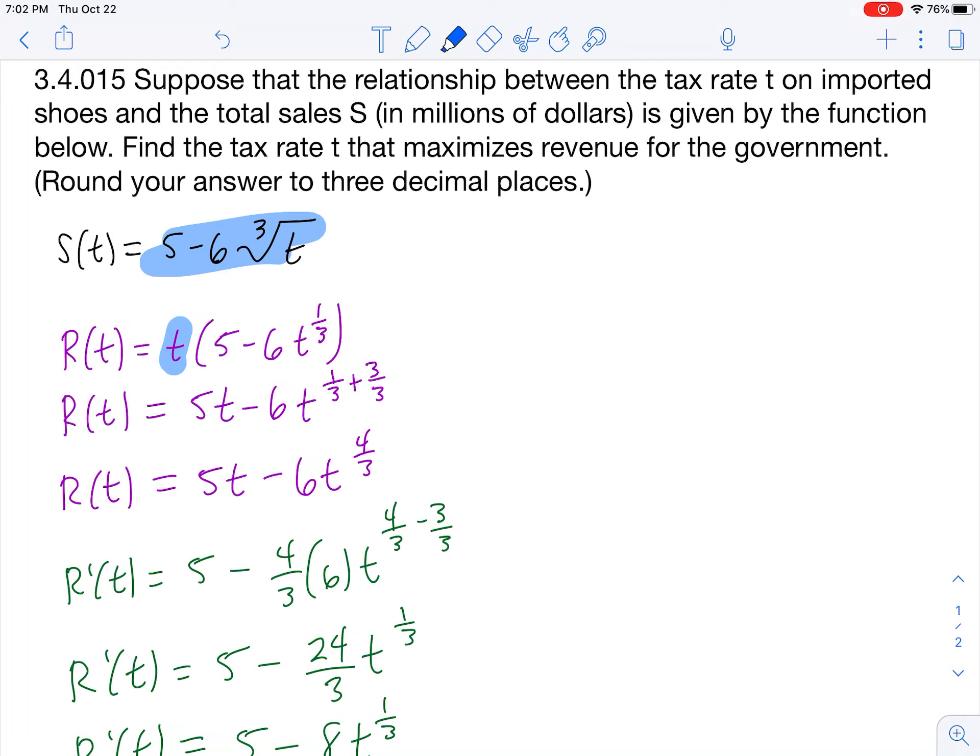Multiplying 5 minus 6 cube roots of t times t looks like this. I first change the cube root of t to t to the one-third power so that it's easier to work algebraically. Then we need to distribute the t inside the parentheses.